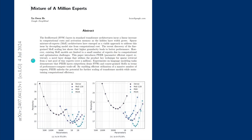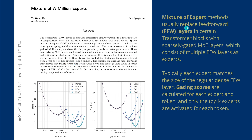The next paper was from July 2024: Mixture of a Million Experts by Google DeepMind. They introduced a novel layer design that utilizes the product key technique for sparse retrieval from a vast pool of tiny experts — a million experts — with specific gating scores calculated for each expert per token, and only the top-K experts are activated for each token, with an unbelievable number of experts.